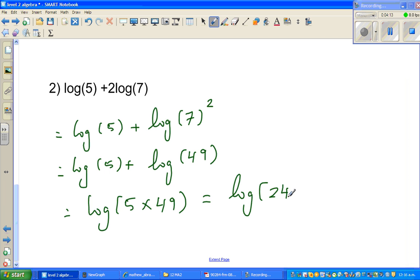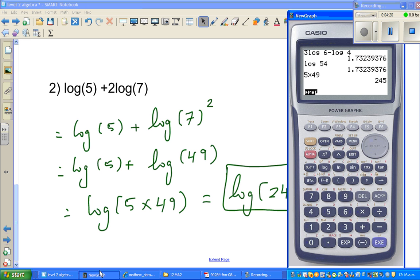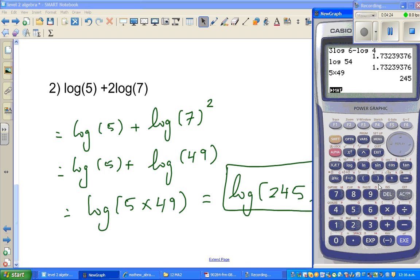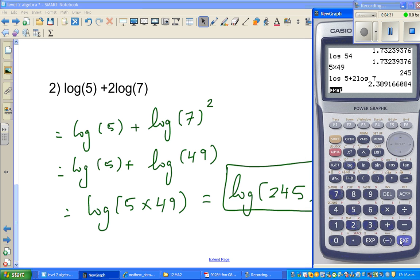So, this is writing the answer as a single logarithm. So, how do we check your answer? Again, the same thing. So, you can type in log 5 plus 2 log 7. That will be 2.389 whatever. And, then you press log of 245. That will give you the same answer. And, if the answers are same, you are fine.